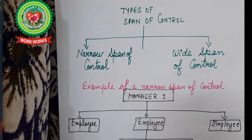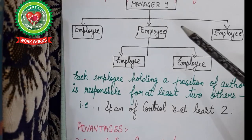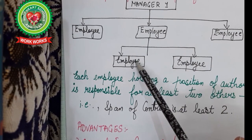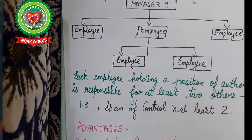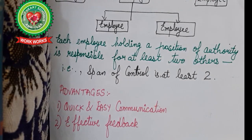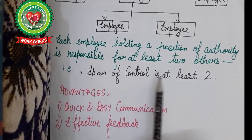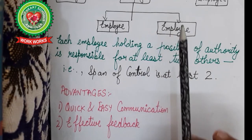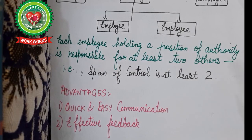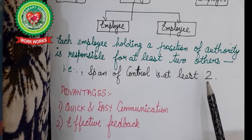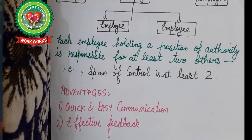Let us discuss narrow span of control. A manager has three employees working under him, and one of those employees is responsible for two more employees. So each employee holding a position of authority is responsible for at least two others. Since the number of employees one person can hold is the span of control, and here that number is two, this is narrow span of control — when the number of employees you can handle is least.